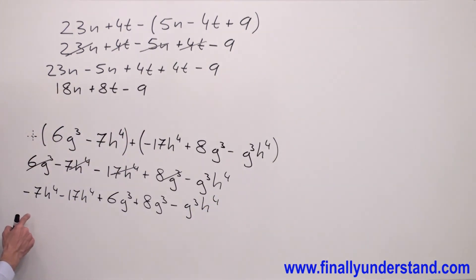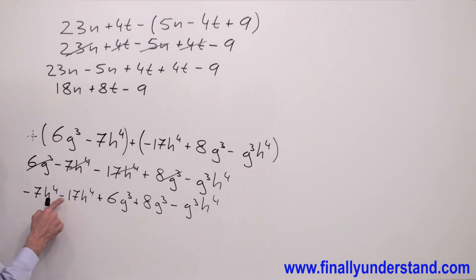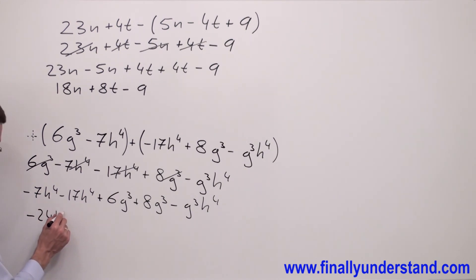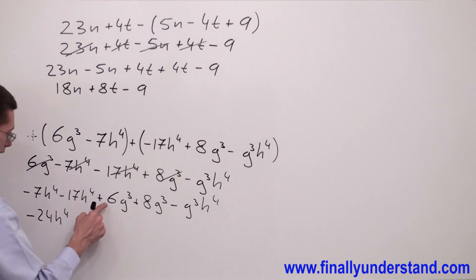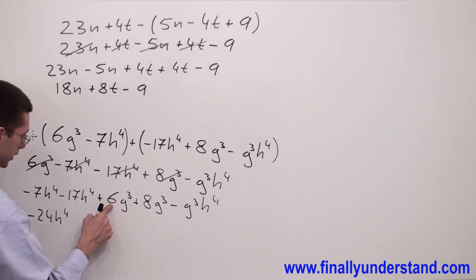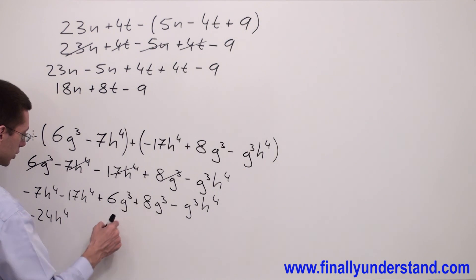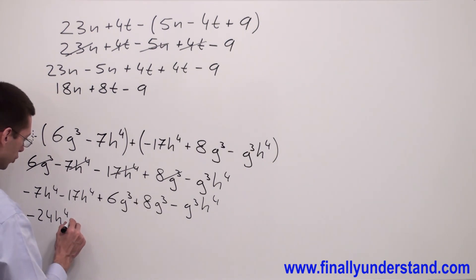Next, I'm going to combine the like terms. Minus 7 and minus 17 gives negative 24h to the fourth. Then 6 plus 8 is 14g to the third. The solution to this problem is negative 24h to the fourth plus 14g to the third minus g to the third h to the fourth.